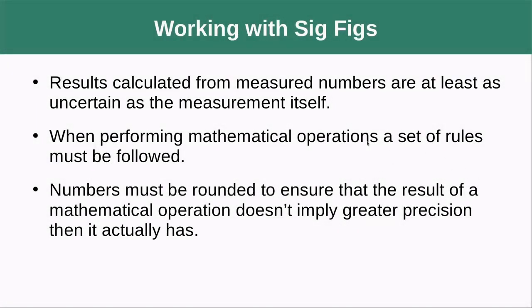So let's talk about how we work with sig figs. Results calculated from measured numbers are at least as uncertain as a measurement itself. So we're indicating something about the measurement technique that we used. How accurate was this when we're writing our measured numbers with significant figures?